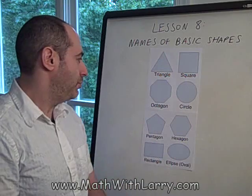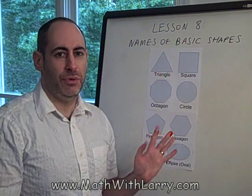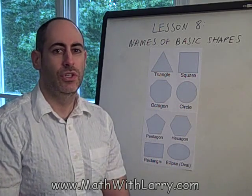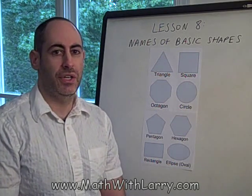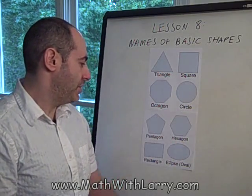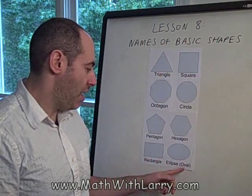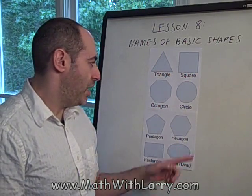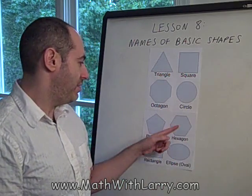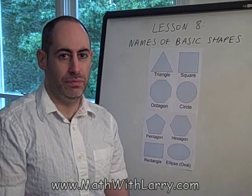Now, some of the shapes that you see here are considered to be polygons. There are a few conditions that have to be met for a shape to be a polygon. First of all, for a shape to be a polygon, it has to have no curves at all. So the circle is not a polygon, and the ellipse — which is more commonly known as an oval — is not a polygon because they have curves. For a shape to be a polygon, it has to have nothing but straight edges and there has to be no gaps at all.